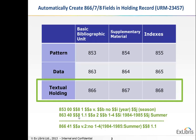As you can see, it's not a very friendly format. So we have a pattern, and we have data. And the third thing we have is the textual holding — that's the 866 field over here. This is what we want a patron who's looking for this on Primo to see: very nicely organized, like volume 2, number one through four, 1984, 1985 summer. Now, if you have an 85x and you have an 86x, you have all the information you need to automatically generate the 866. In other words, the pattern and the data are enough to automatically create the textual holding.